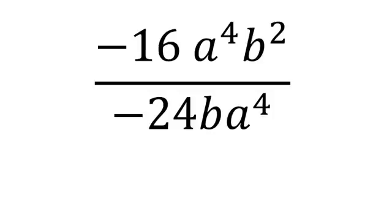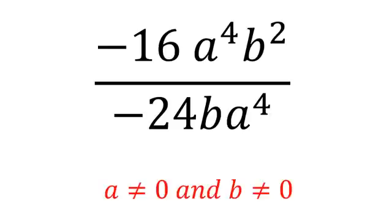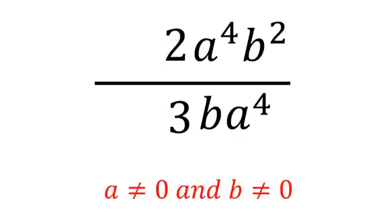Another example: -16a⁴b²/-24ba⁴. I can remove the minus with a minus. Of course a and b should be different from zero. I will remove the negative sign with the negative sign. 16 and 24 both are divisible by 8, so I will divide 16 by 8, it becomes 2, and 24 by 8, it becomes 3.